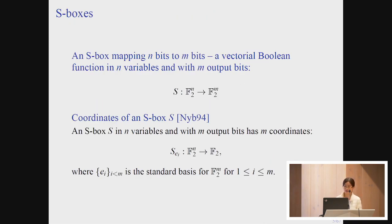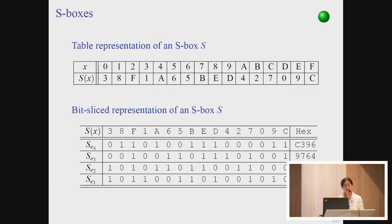An S-box mapping from M-bit to M-bit will have M coordinates, which are the underlying Boolean functions, denoted S_i. There are many ways to represent an S-box: the direct way is to use a lookup table. There is also a b-slice representation, which is the concatenation of the value vectors of the coordinates. Both representations can be accepted as input to Pagan.